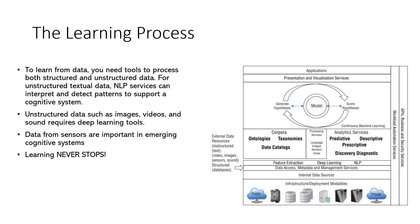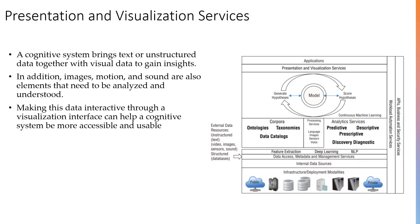The learning should never stop — if it stops, it's not cognitive. The next layer is presentation and visualization services. The cognitive system handles a lot of data, bringing text and unstructured data together, and you cannot understand it without proper visualization. We need images, motion, and sound to be understood and analyzed. Making data interactive through visualization interfaces helps a cognitive system become more accessible and usable, and we achieve this through proper presentation and visualization services.